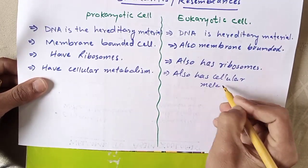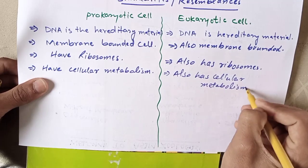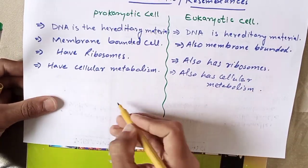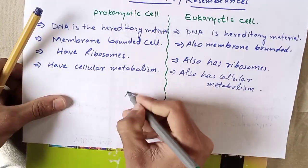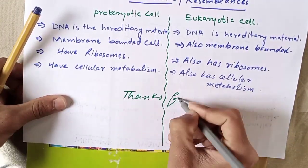The fourth similarity is that prokaryotic cells have cellular metabolism, and eukaryotic cells also have cellular metabolism.